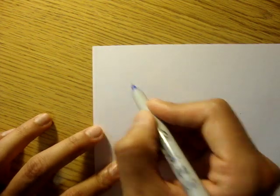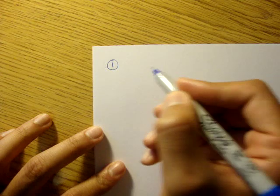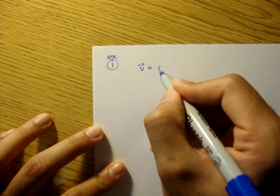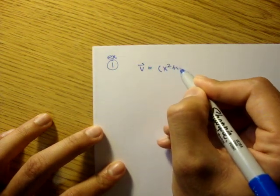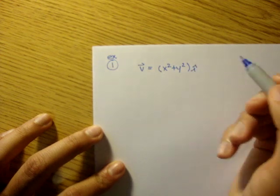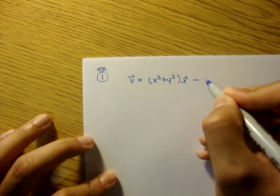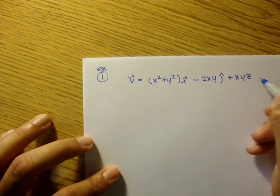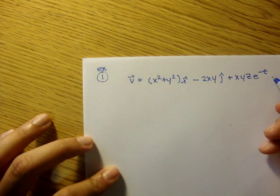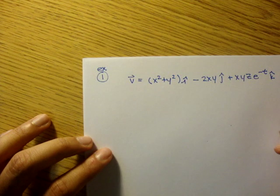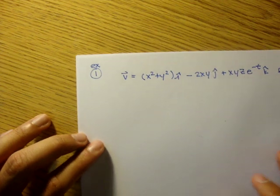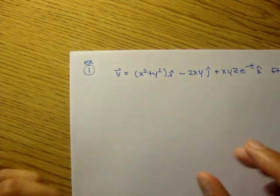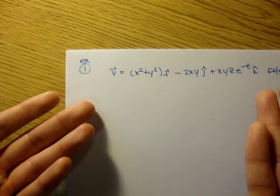The first one, we'll call it example 1, we have a velocity field given. The velocity field is x squared plus y squared in the i direction, minus 2xy in the j direction, plus xyz e to the negative t in the k direction. And this can be in whatever, feet per second, that's fine. We drop the little particle onto some fluid that was flowing, and this was the resulting velocity field.